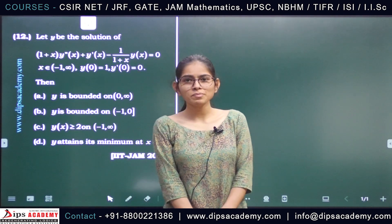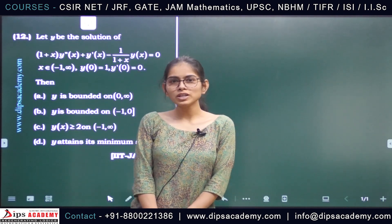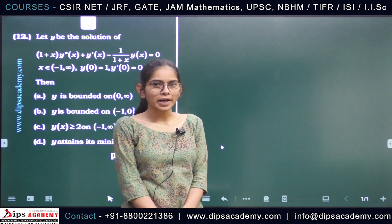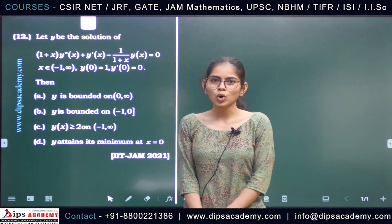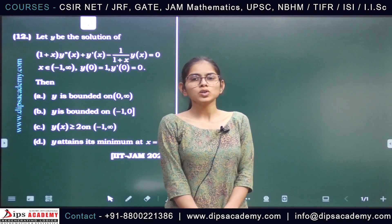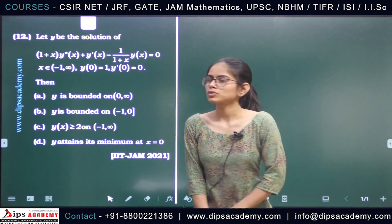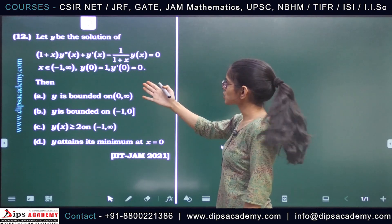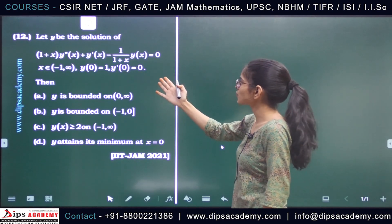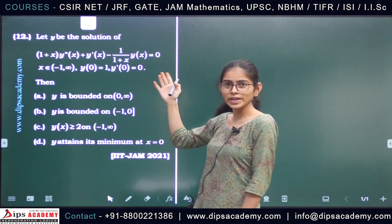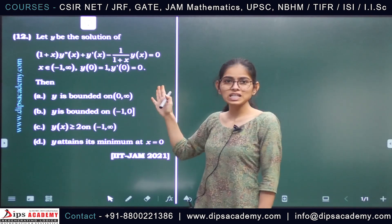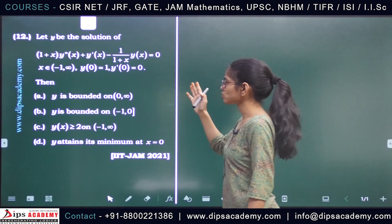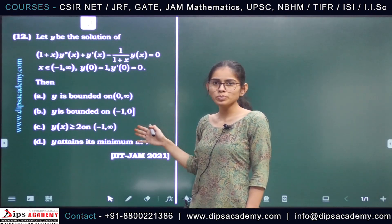Hello everyone, welcome back. Today's question we are going to discuss is from JAM 2021, from the subject ordinary differential equations. The question says: let y be the solution of the differential equation (1+x)y''(x) + y'(x) - 1/(1+x) · y(x) = 0, with initial conditions y(0) = 1 and y'(0) = 0.